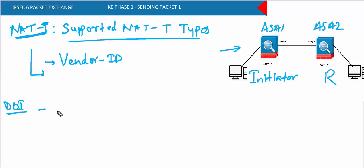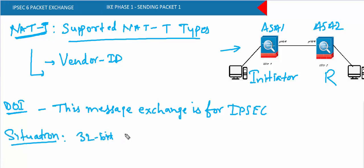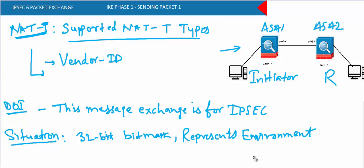The DOI (Domain of Interpretation) field tells that this negotiation is for IPsec. ISAKMP is a very generic protocol that can negotiate a number of protocols, so it's important to specify that this particular ISAKMP exchange is for IPsec negotiation — that is done with the DOI field. The Situation is a 32-bit number that represents the environment under which the IPsec SA proposals and negotiation are carried out.